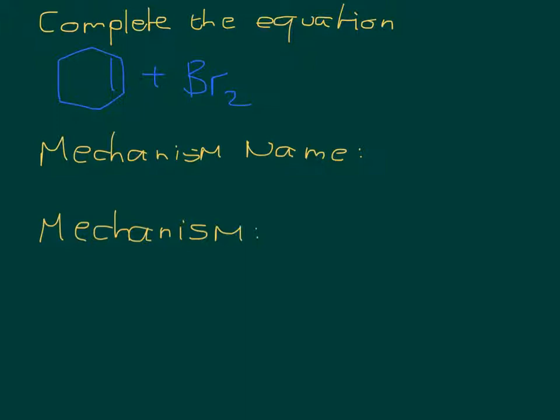So we've got alkene here, and we're going to add bromine to it. So quite straightforward. Obviously the bromine is going to add across the double bond. You've known this since your good old days of GCSE, to give you 1,2-dibromo-cyclohexane. Mechanism name is obviously going to be electrophilic addition, because my attacking species is the electrophile, which is bromine, and I am adding two molecules together.